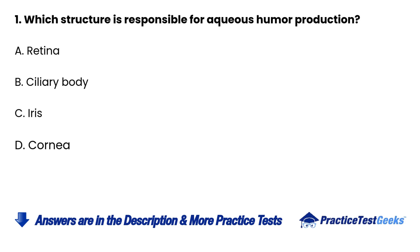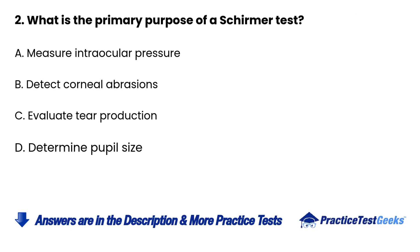1. Which structure is responsible for aqueous humor production? A. Retina B. Ciliary body C. Iris D. Cornea